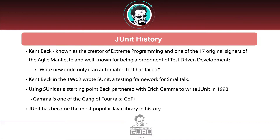Interestingly enough, Ken Beck, the author of the test-driven book, is also known as the creator of Extreme Programming and one of the original 17 signatories of the Agile Manifesto. He also wrote: 'Write only new code if an automated test has failed.' That's one of his famous quotes. Back in the 90s, Beck wrote SUnit, a testing framework for Smalltalk, and used SUnit as a starting point.